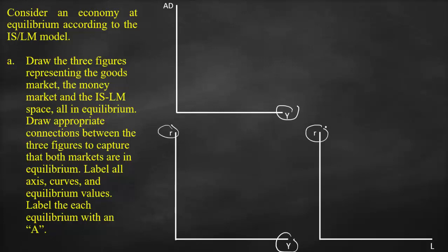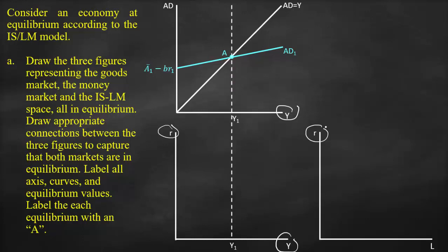In the goods market, we draw output as an upward 45-degree line and then draw the upward aggregate demand curve. The point of intersection is the equilibrium, which we label as point A. We draw a vertical dotted line to reflect the equilibrium output in both the goods market and the ISLM model.